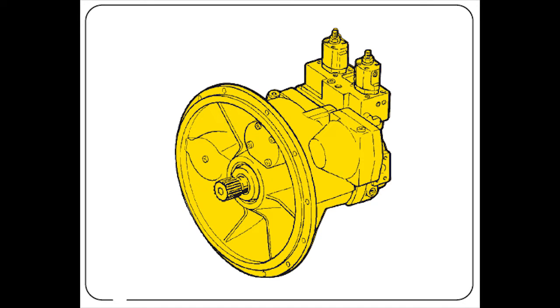Axial Piston Variable Double Pump A8VO. Features: Variable double pump with two axial tapered piston rotary groups of bent axis design for hydrostatic drives in open circuits.